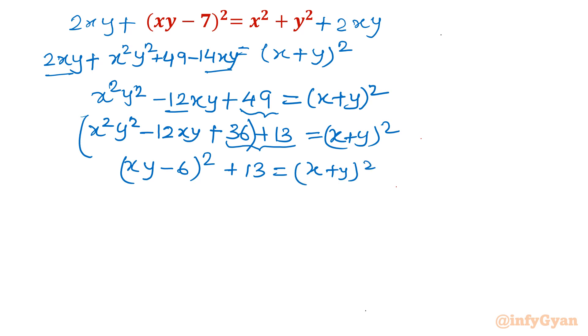Take square terms to the left, constant to the right. So xy minus 6 whole square minus x plus y whole square equal to negative 13.